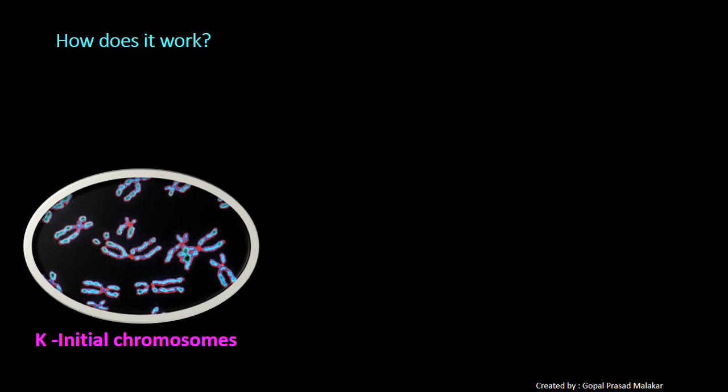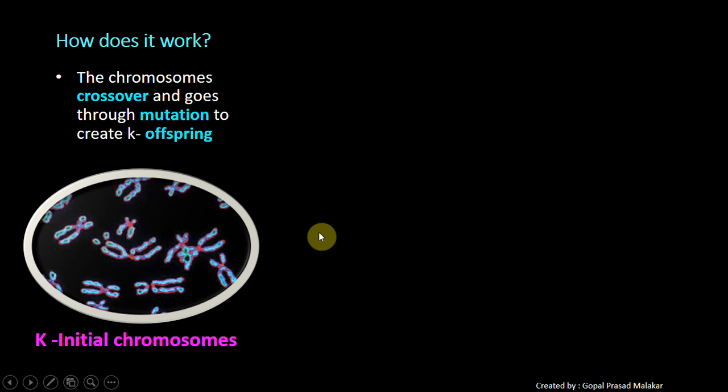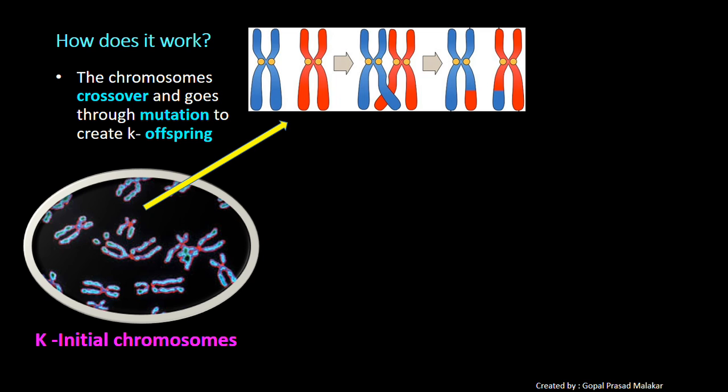Then what you do? With K initial chromosomes, through crossover and mutation, you create another K offspring. This is an example of crossover. What is crossover? Some portion of blue has gone into the red and some portion of red has come into the blue. So it is swapped part and that is what is called crossover.